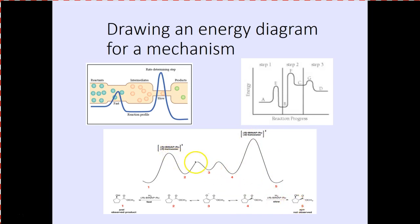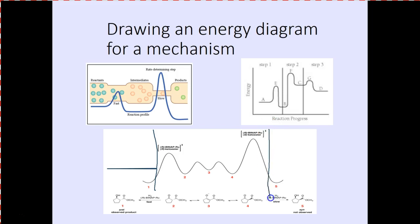This slow step goes from four to five, with four steps occurring here. In the past, we've only been concerned about the things on either side — the beginning and end — and nothing in the middle. Kinetics concerns itself with what happens in the middle.